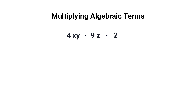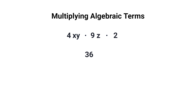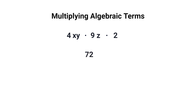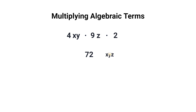Let's try one more. Start by multiplying the numbers: 4 multiplied by 9 equals 36, and 36 multiplied by 2 equals 72. Now multiply the variables: x multiplied by y equals xy, and xy multiplied by z equals xyz. Since 72 is being multiplied by xyz, we simply write 72 next to xyz. So 4x multiplied by 9y multiplied by 2z equals 72xyz.